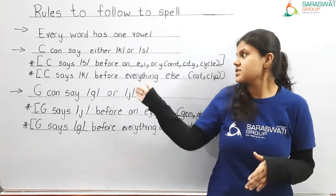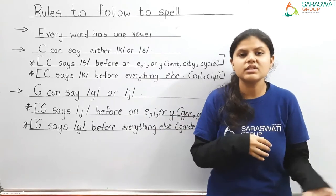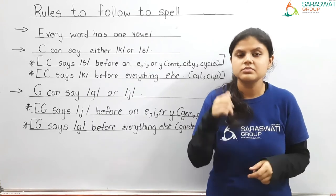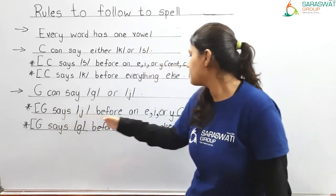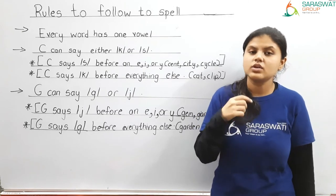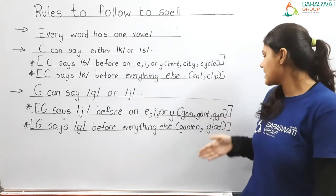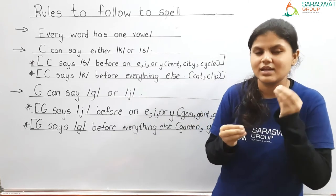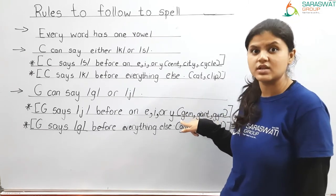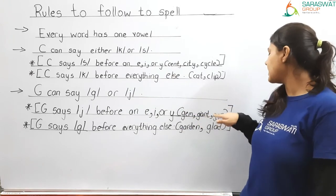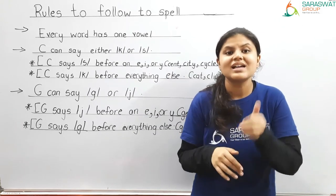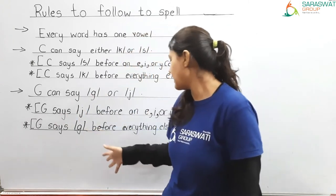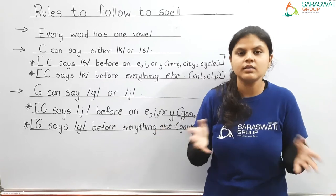As we learned with letter C, letter G also makes two sounds: G and J. The rule is: G says J before letters E, I, and Y. For example: giant and gym — G makes the J sound here. So whenever G is before letters E, I, and Y, it will make the J sound. And before anything else — any other letter besides E, I, and Y — G makes the G sound. These are the rules which you need to remember to improve your spelling as well as your pronunciation.